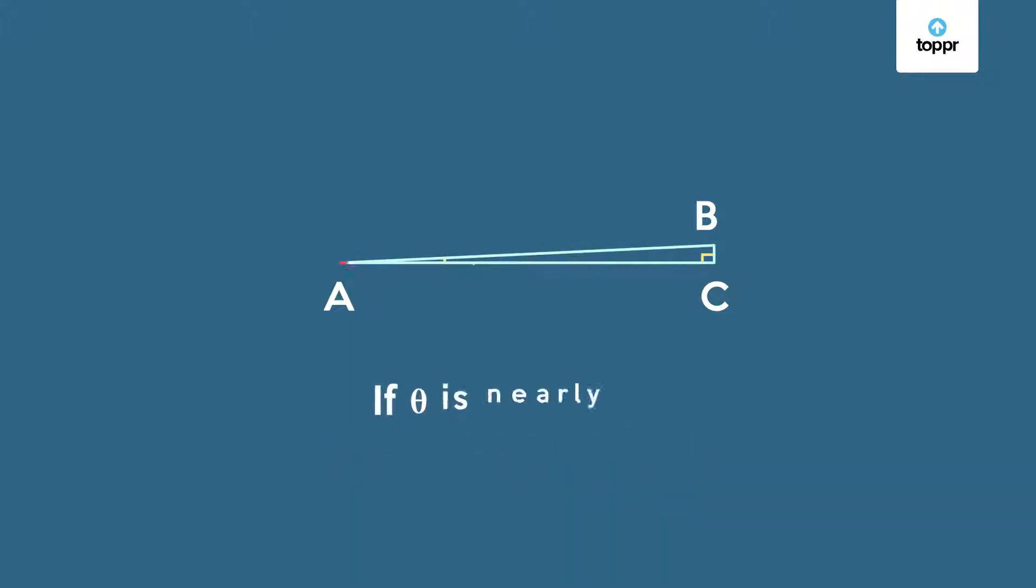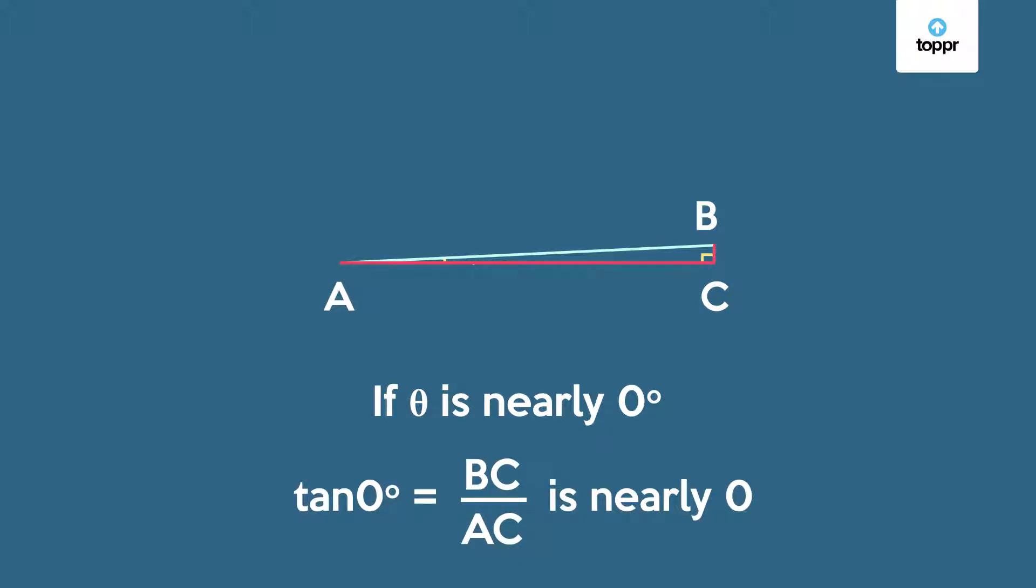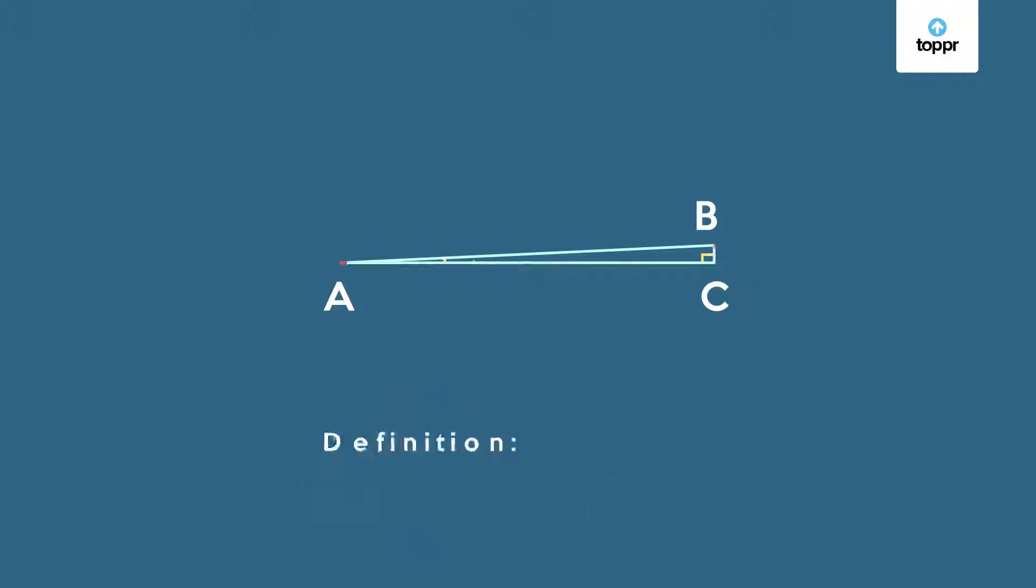Can you now guess what the value of tangent of 0 should be defined as? As we've already seen, if theta is nearly 0, BC upon AC is also nearly 0. So we define the tangent of 0 as 0.